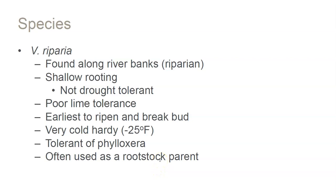Vitis Riparia, as the name suggests, is found along riverbanks — riparian areas. Because Riparia is generally found by riverbanks, the rooting angle is shallow since the water table is usually high, so roots go outward rather than down. This makes it not super drought tolerant, and it also has quite poor lime tolerance. In places like Burgundy with high lime in the soils, you can end up with lime-induced chlorosis, so straight Riparia rootstock may not be the best in those sites.